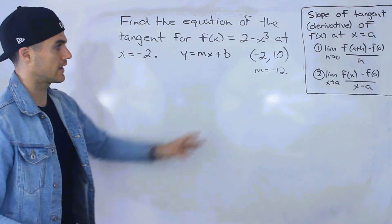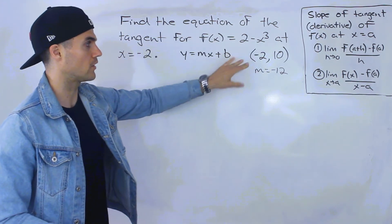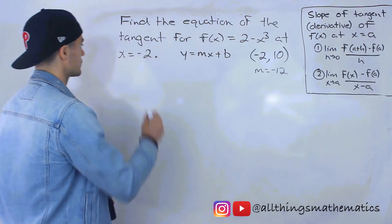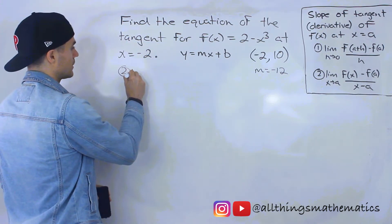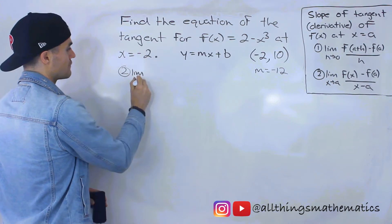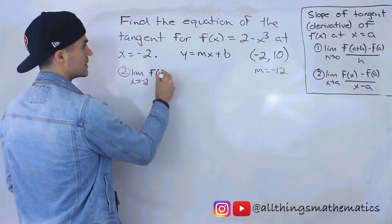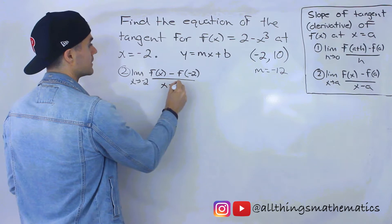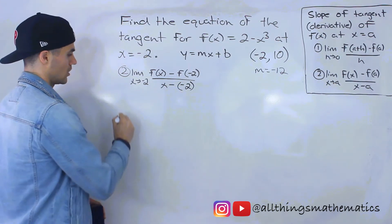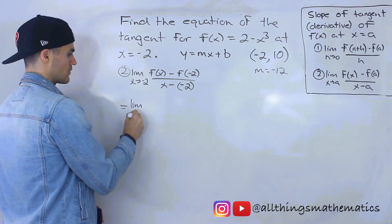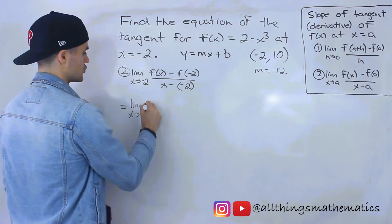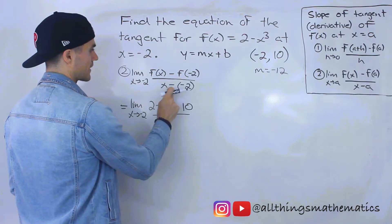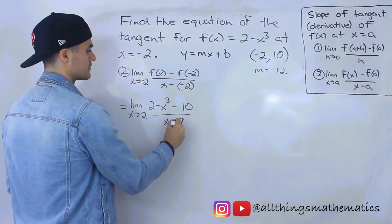Now I'm going to use the second definition to confirm we get that same slope of negative 12. Using the limit as x approaches a, where a is negative 2, we have f(x) minus f(negative 2) all over x minus negative 2. So that's 2 minus x cubed minus 10, all over x plus 2.